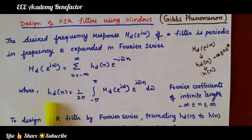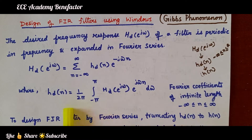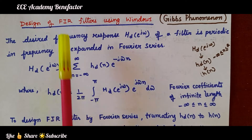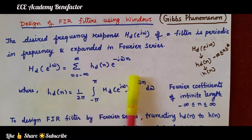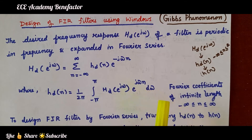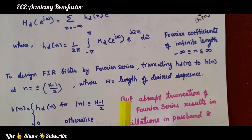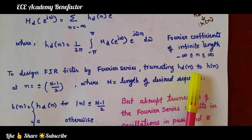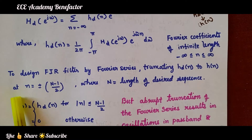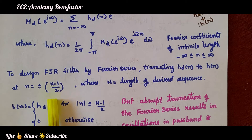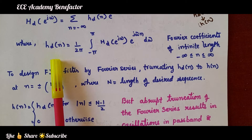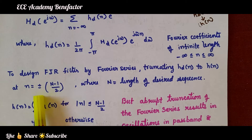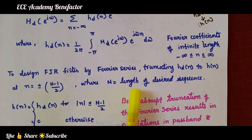H_d(n) is known as the Fourier coefficient or desired impulse response of infinite length. But we need an impulse response of finite length because we are designing an FIR filter. As H_d(n) is infinite in nature, we have to truncate it. To design an FIR filter by Fourier series, we truncate H_d(n) to H(n) at n equal to plus or minus (N−1)/2, where N is the length of the desired sequence.